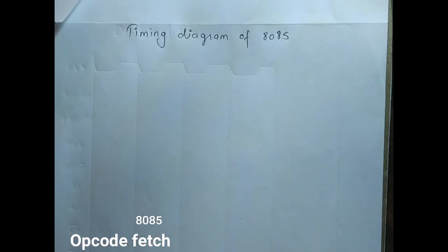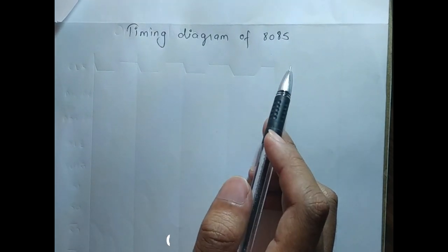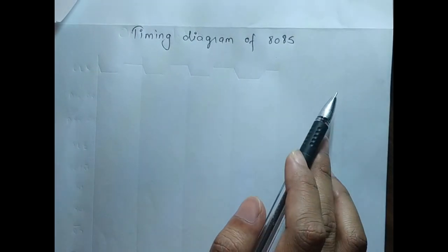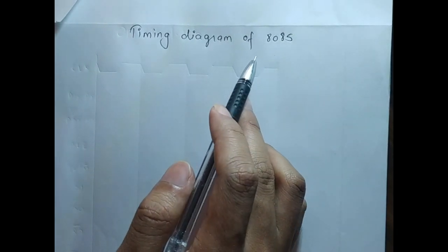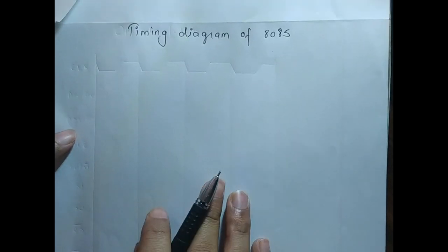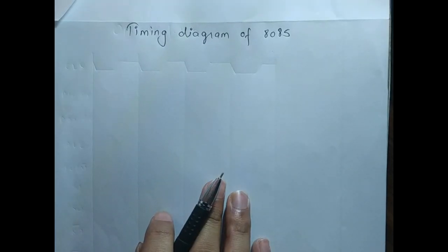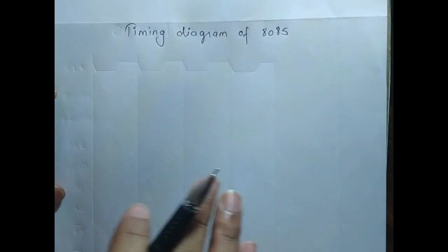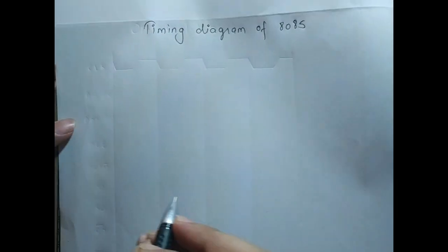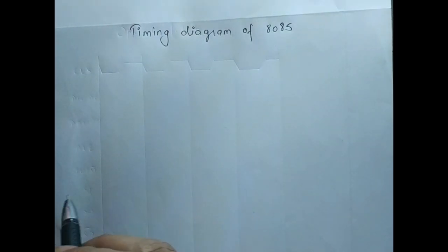Hello all, today we will learn about the timing diagram of 8085. If you learn it in the correct way, this is one of the easiest topics to solve. First we'll learn about the timing diagram of the machine cycle. When you know about the timing diagram of the machine cycle, you can draw the timing diagram of any instruction. There are five machine cycles in 8085.